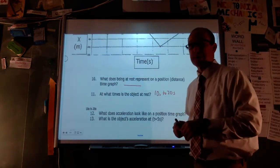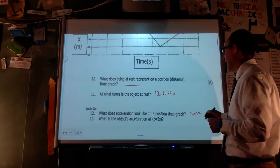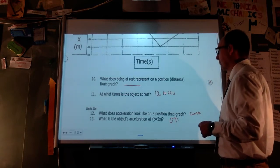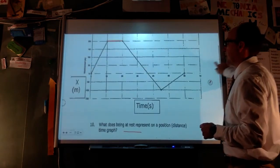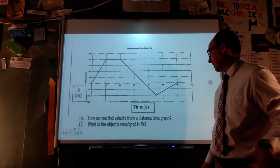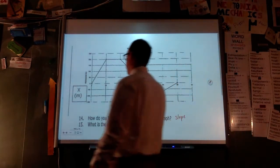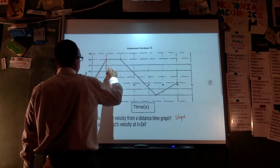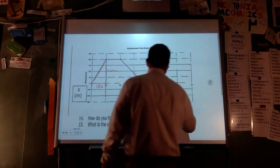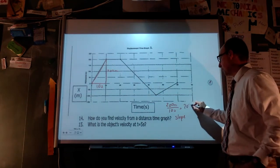What is the object's acceleration at five seconds? I don't have any curves here, so I'm going to say it's zero — at five seconds it has a velocity but it's constant; it's a straight line. How do I find velocity from a position-time graph? That's the slope. What's the object's velocity at five seconds? It's traveling 200 meters in 10 seconds, so that's 200 ÷ 10 = 20 meters per second.